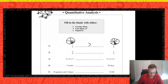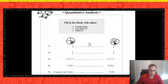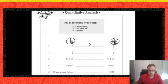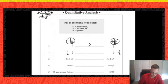Looking at number two: four eighths versus two fourths. Both of those are another way of saying what? If we reduce both of those fractions to the lowest common denominator, they both equal one half. So those are equal.